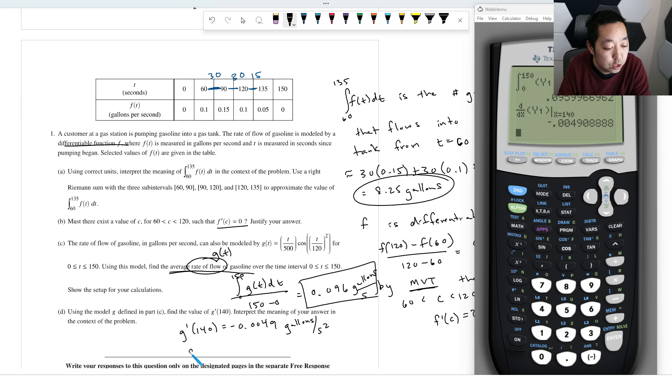And then your interpretation is that the rate of flow of gasoline is decreasing by 0.0049 gallons per second squared.